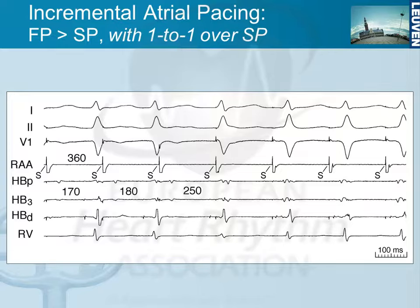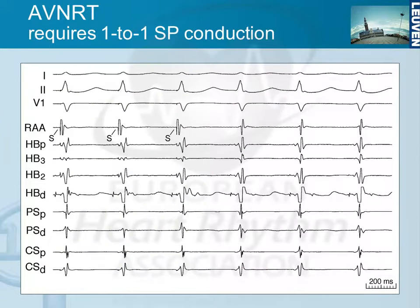You can do incremental atrial pacing — start pacing at 800 milliseconds and gradually come down. Here at 360 milliseconds, the AH interval jumps from about 170–180 to 250, the fast pathway blocks, we go to the slow pathway, and then we stay on the slow pathway with one-to-one conduction in subsequent beats. That is one of the conditions you need to develop AV nodal reentrant tachycardia. If the slow pathway cannot conduct one-to-one antegradely, it will never support AVNRT, because during AVNRT you also have one-to-one conduction down the slow pathway and one-to-one conduction back to the atrium. That is what distinguishes somebody who has AVNRT — something you have to evaluate by incremental atrial pacing.